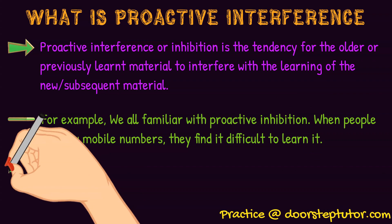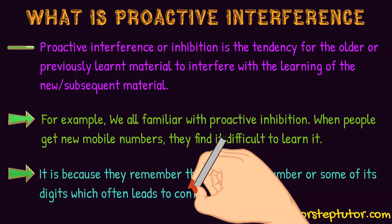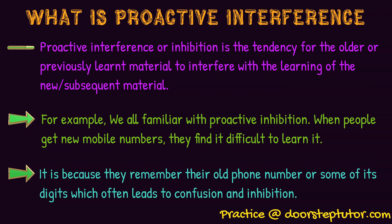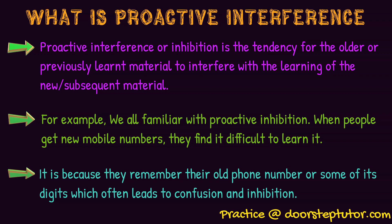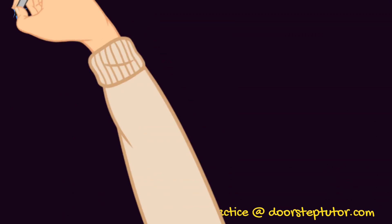We are all familiar with proactive interference in daily life. For example, when we get a new phone number, people often find themselves remembering their old phone number instead of the new one. There are many such examples in daily life that fall under the category of proactive interference or proactive inhibition. This is another diagrammatic representation of retroactive and proactive interference.